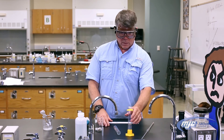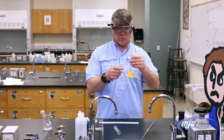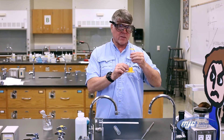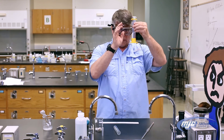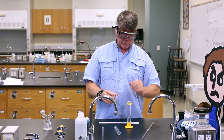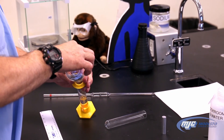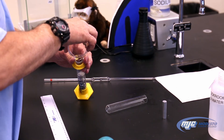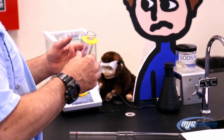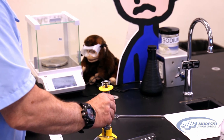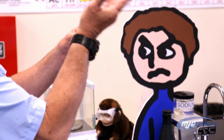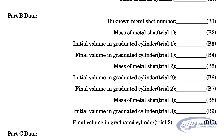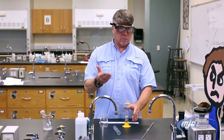Once the metal shot is weighed and in the beaker, take a graduated cylinder and add tap water to about halfway. Read the initial volume — one place past the decimal in milliliters — that's B3 for trial one. Then carefully pour the metal shot into the graduated cylinder. Be careful not to splash water out or break the cylinder. Gently tap it on the counter to release any trapped air bubbles. Read the new final volume — that's B4. The difference between initial and final volumes gives you the volume of the metal shot. Repeat for trials two and three.